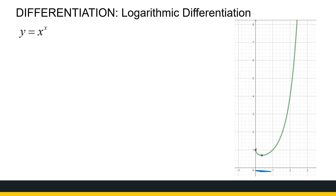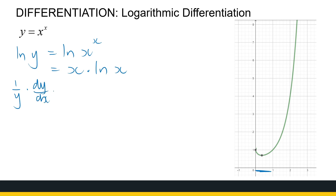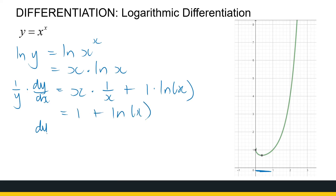We must use logarithmic differentiation. Taking ln of both sides: ln(y) equals ln(x^x), and using log laws that becomes x·ln(x). Now applying implicit differentiation, the left side gives (1/y)·dy/dx. The right side is a product rule: the first times the derivative of the second, plus the derivative of the first times the second. That gives x·(1/x) plus ln(x), which simplifies to 1 + ln(x).